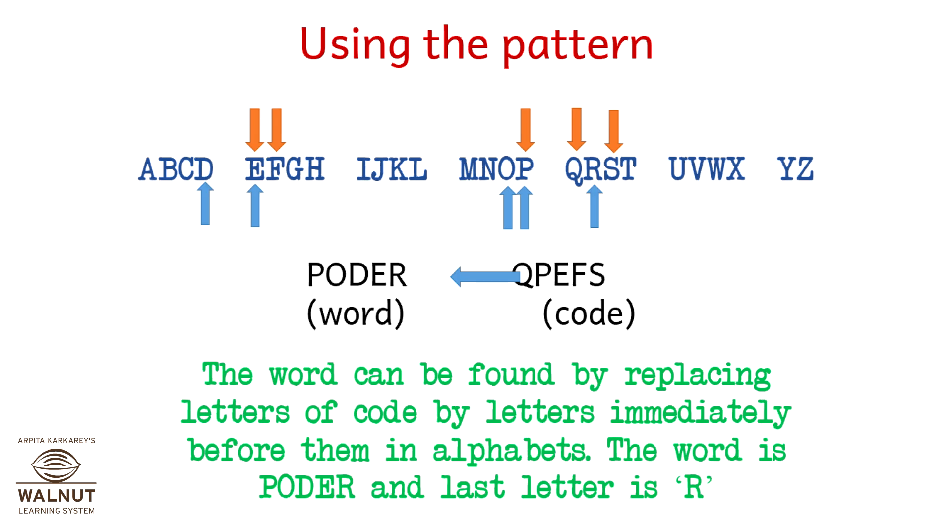Now let's reverse QPEFS and find out what the original word was. The word can be found by replacing the letters of the code by letters immediately before them in the alphabet. The word is PODER and the last letter is R.